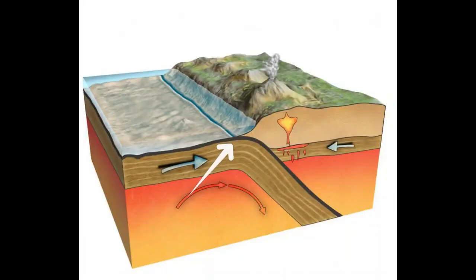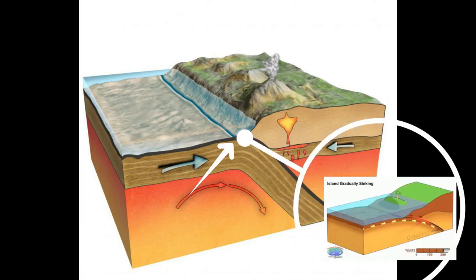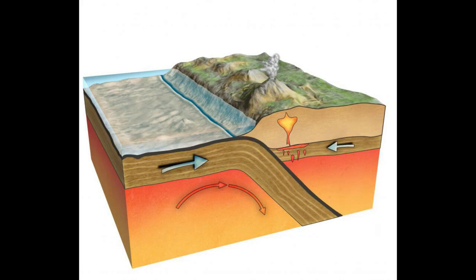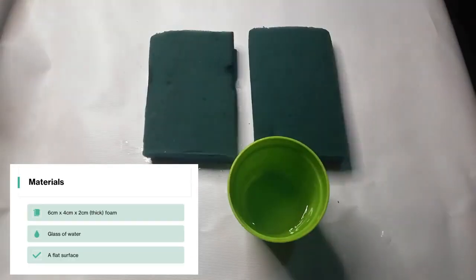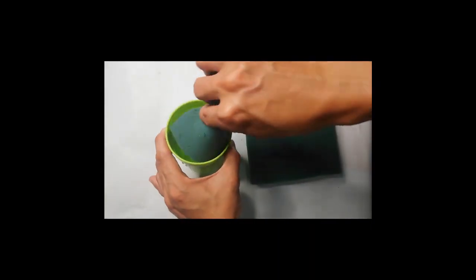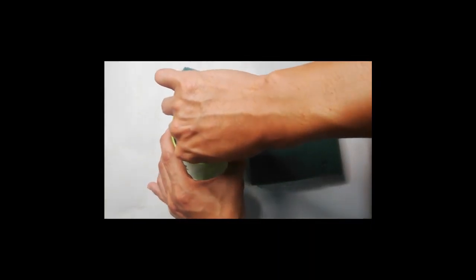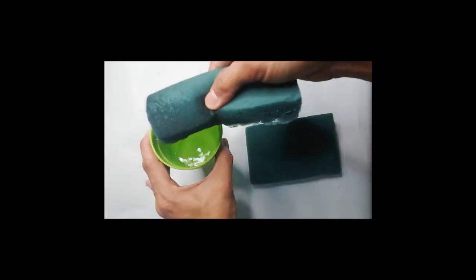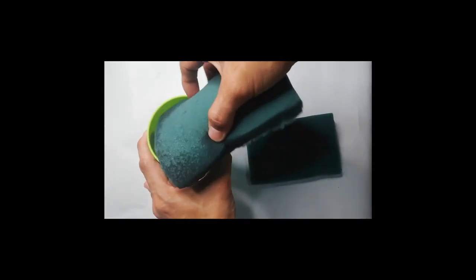Let us perform this experiment to understand the processes that occur along the oceanic and continental crust. For this simple experiment you will be needing the following materials. Dip one side of the foam into the water and place it 2 to 3 cm away from the other foam.